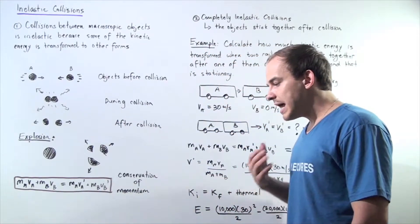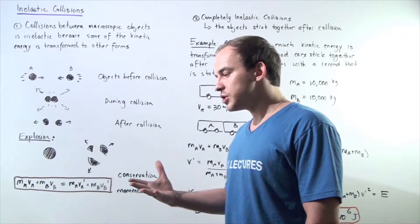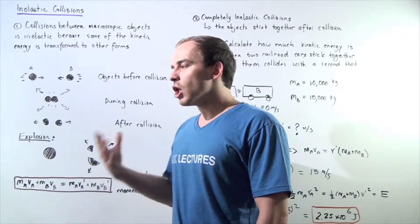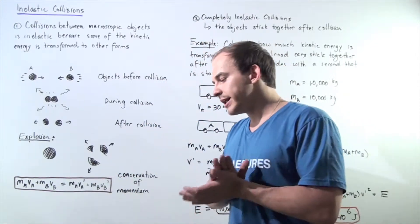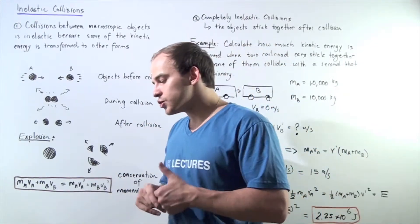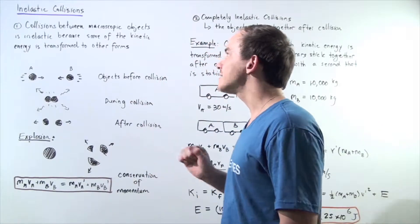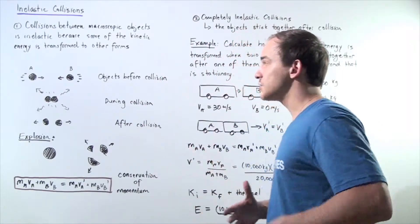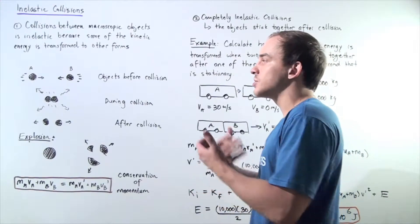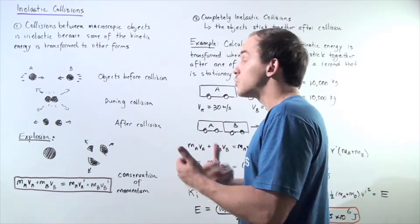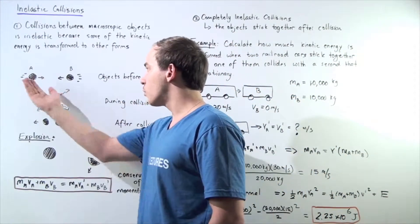Whenever two or more macroscopic objects — objects that are large enough for us to see — collide, those collisions are usually to some extent inelastic. That means some of that initial kinetic energy is transformed into other forms of energy.